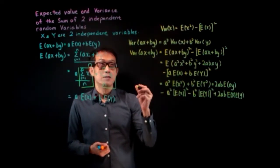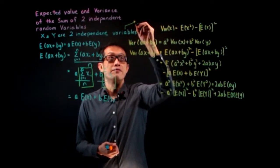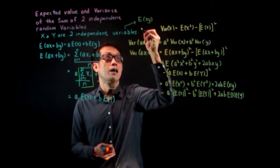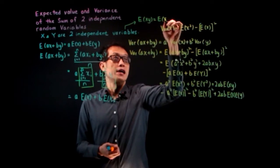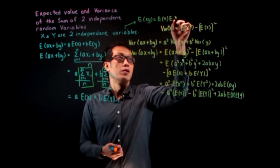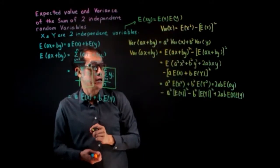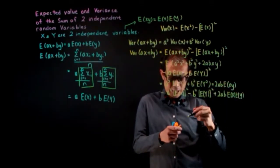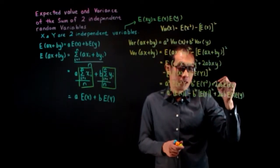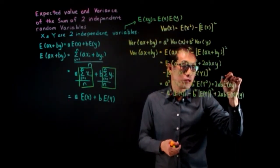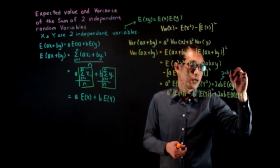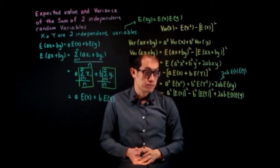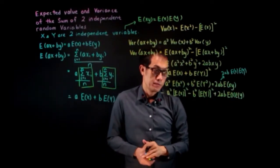Now, if X and Y are independent, that means the expected value of their product will equal the product of their expected values. So this term — 2ab times expected value of XY — equals 2ab times expected value of X times expected value of Y, because they are independent.